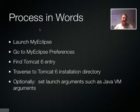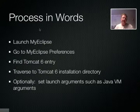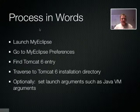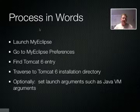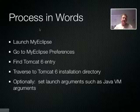Let's look at the process in words. What we're going to be doing today is launch the MyEclipse environment, then go to the Preferences panel for MyEclipse and find a Tomcat 6 entry. At that point we're going to associate the directory where we've installed Tomcat 6 with MyEclipse, and then set some arguments that may be passed on to the Java Virtual Machine when we launch the Catalina or Tomcat environment.